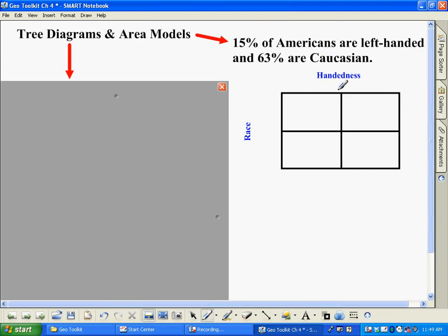So what I've done here is I've broken this into a table where we have handedness as one variable and race as the other. We have people that are right-handed. We have people that are left-handed. We have people that are Caucasian and we have people that are not.